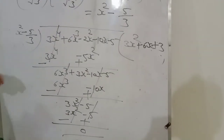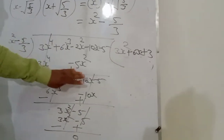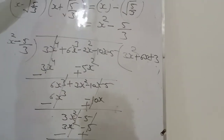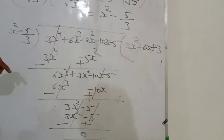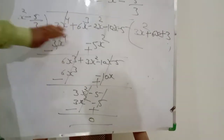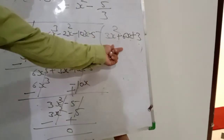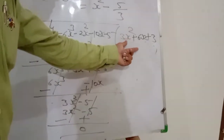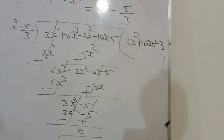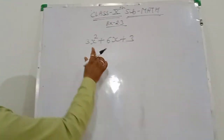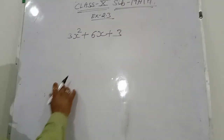Remainder 0. So fx divided by gx complete divide हो चुका है यहाँ पर. इसका मतलब है हम पहले ही prove कर चुके हैं कि यह factor है, और इसलिए यहाँ पर reminder 0 है. अब student, fx को जब gx से divide किया तो quotient हमारे पास है — 3x² + 6x + 3. इस quotient को भी हम middle term splitting से factorize करेंगे और उसी से हमें कुछ factors मिलेंगे.